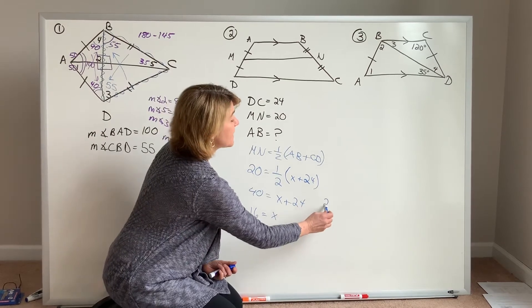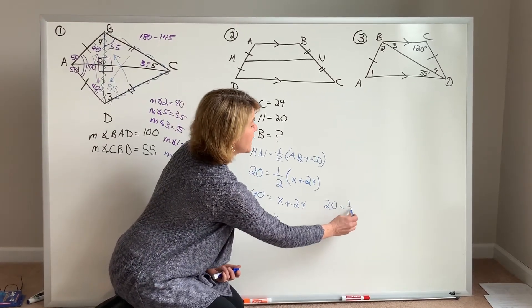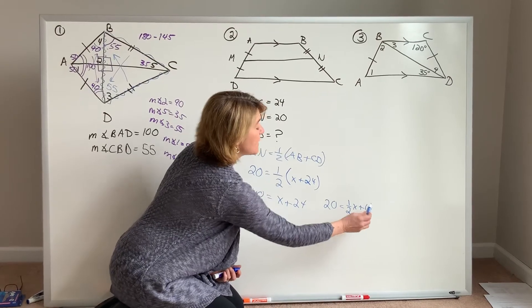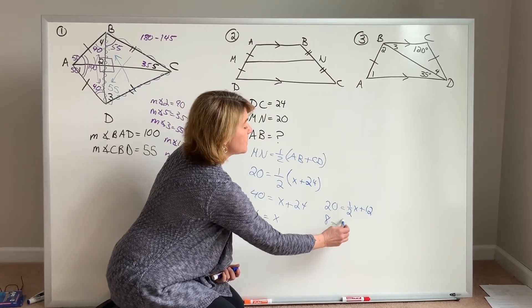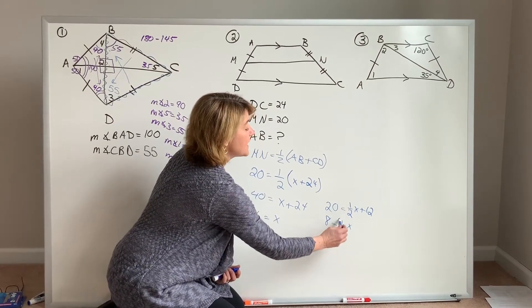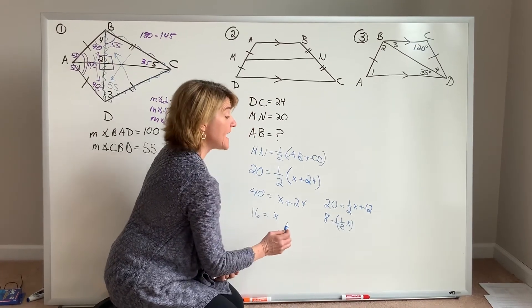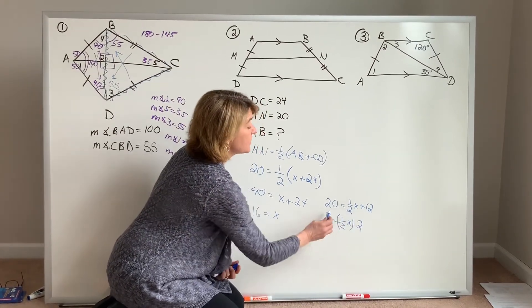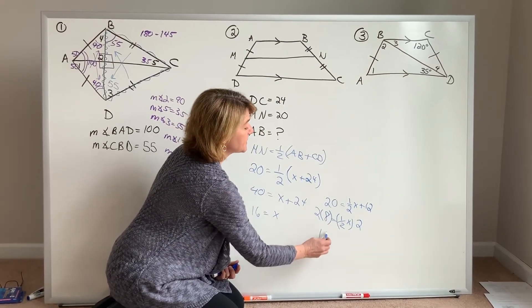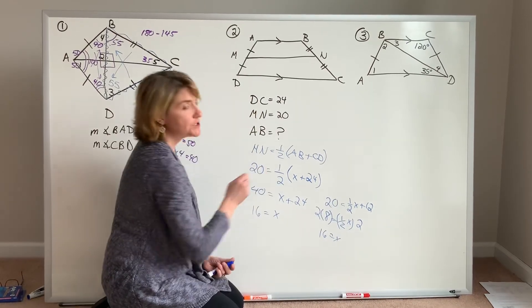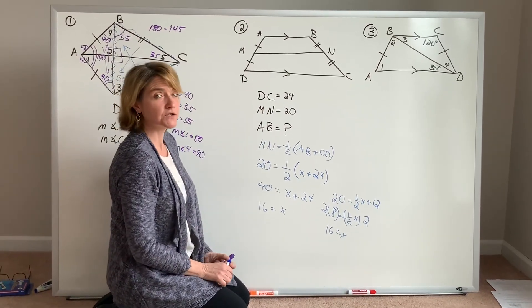Or you do have the option of distributing your one-half. 20 equals one-half X plus 12. I can then subtract 12 from each side, and then I can say in order to go from half of X to a whole X, I would have to multiply by 2. But I think it's easier if we just get rid of that fraction right from the start.